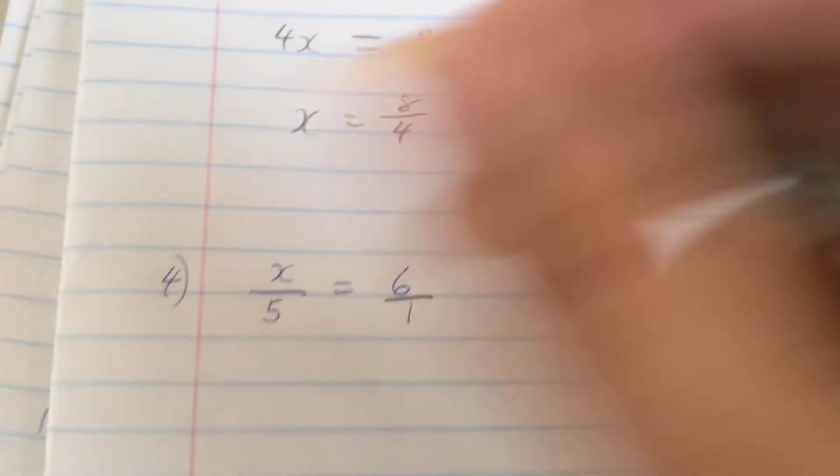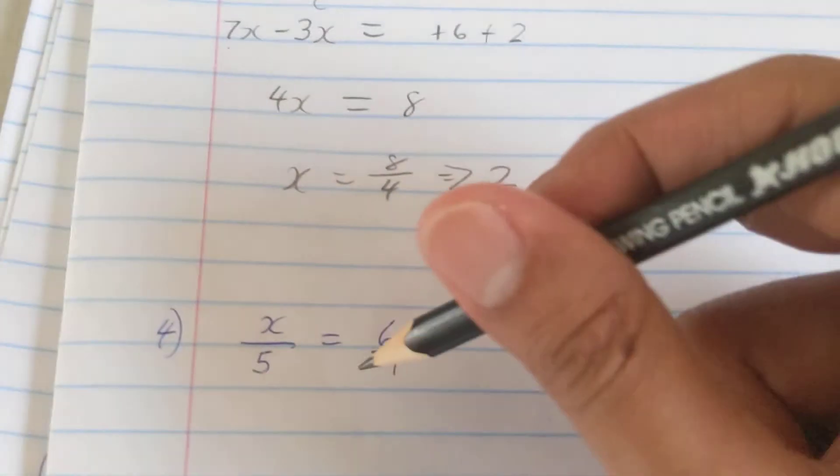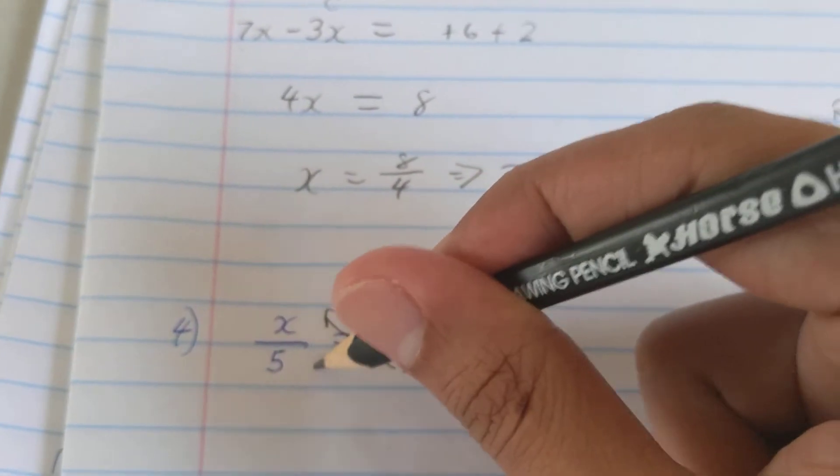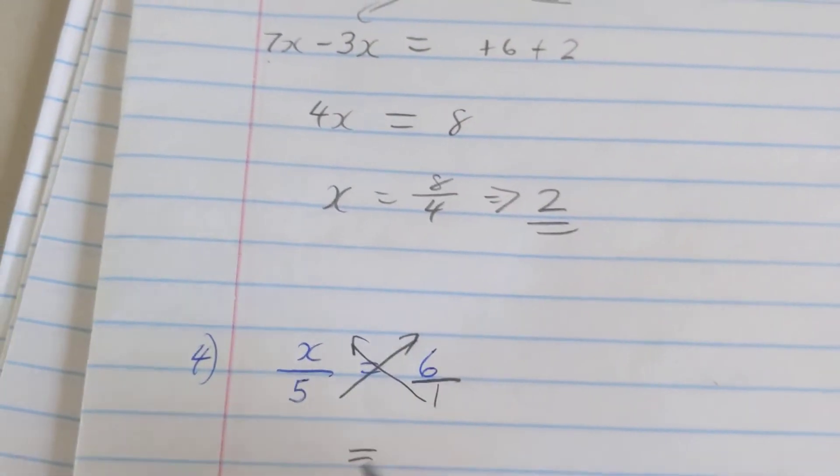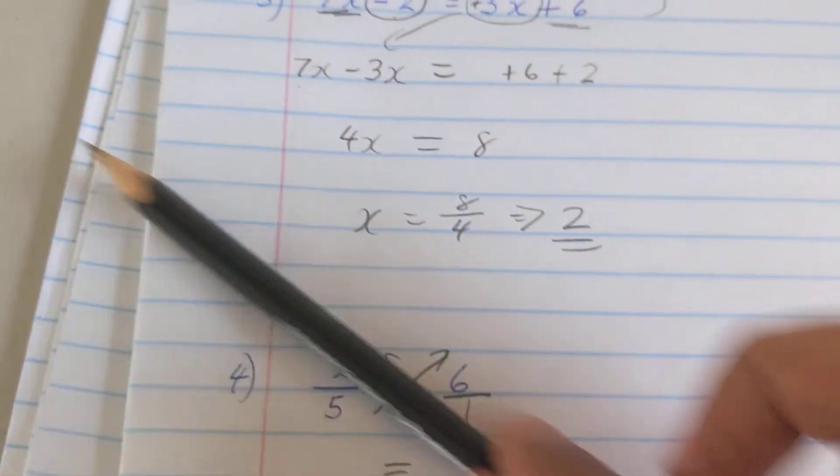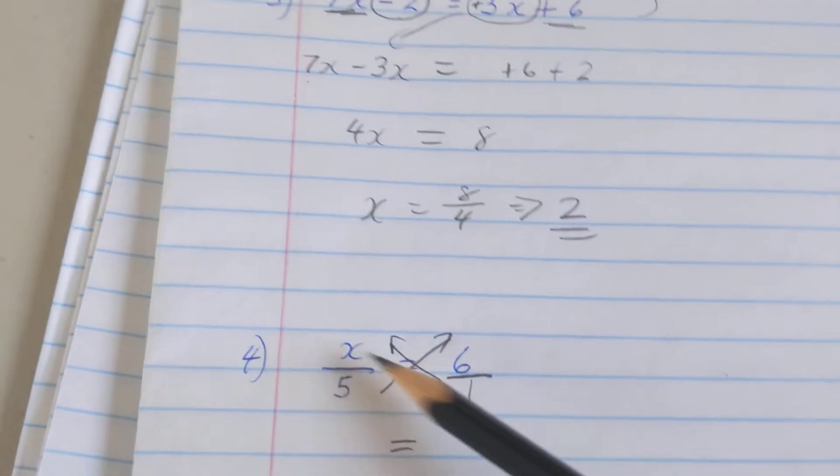Once I have a fraction on either side of the equal sign, I could do something called cross multiplying. I'm gonna multiply across in that same direction. The equal sign not going away, but I'm going to multiply in this direction with the arrow pointing. So it's gonna be 1 times x.